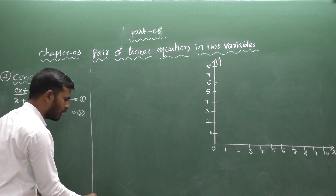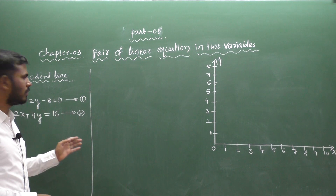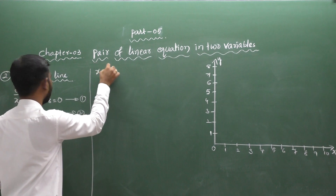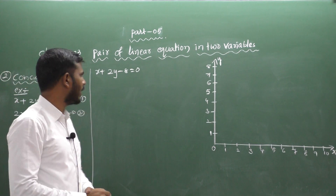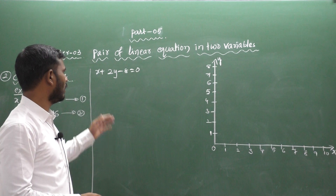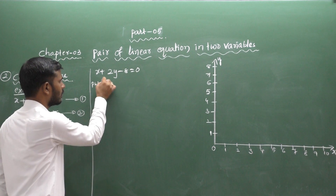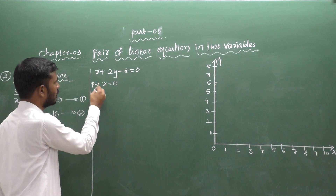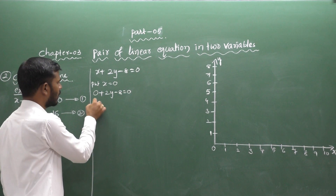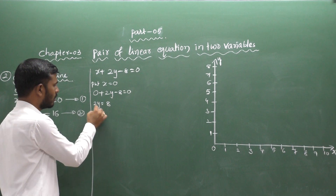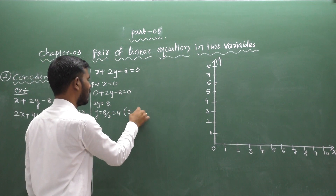First, you have to find out two solutions for equation number 1: x plus 2y minus 8 equal to 0. Consider the random value of x. Suppose x equal to 0: 0 plus 2y minus 8 equal to 0, so 2y equals 8, giving y equal to 4. The first solution set is (0, 4).